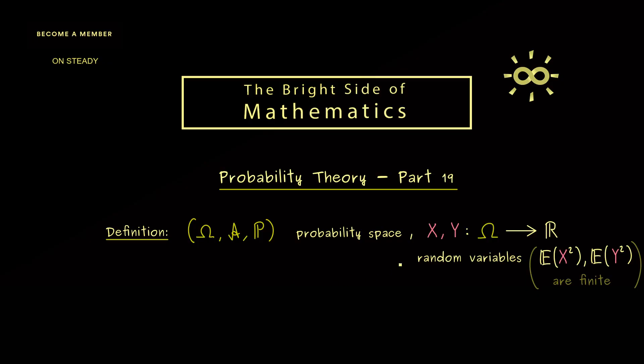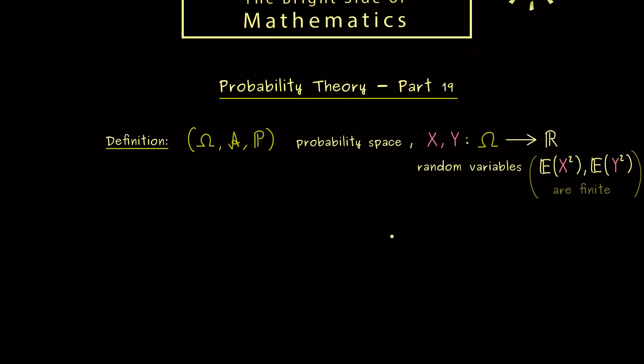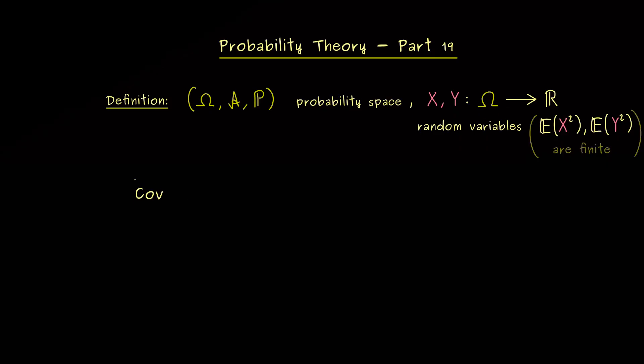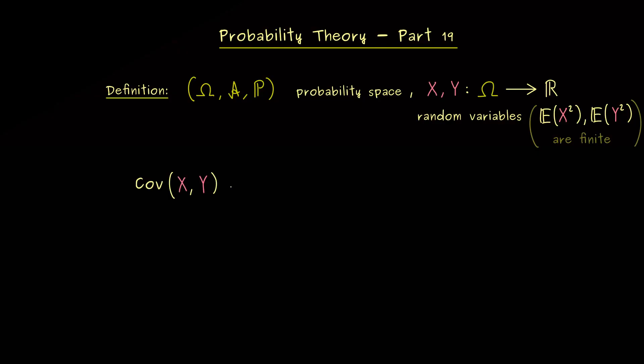And then, we are able to define the so-called covariance of X and Y. And here you see, this is the common abbreviation we have. And now indeed, the definition is not hard to remember, because it is very similar to the variance. First, we take the deviation of X to its average, so X minus expectation of X. And then we multiply this by the deviation of Y to its average. So the square you know from the variance is now a product of two different random variables. And then finally, we simply take the expectation of this whole thing.